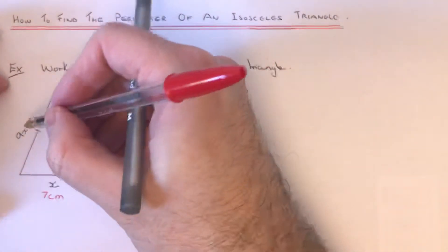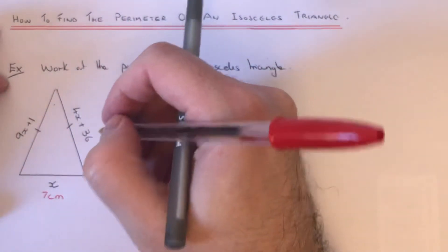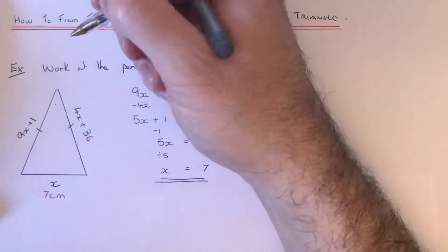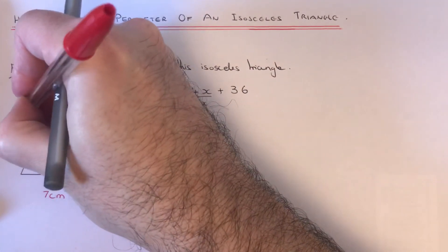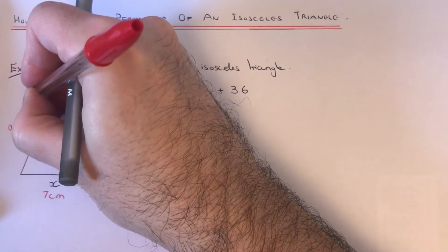Okay, and then this one here is 9x plus 1. So if we substitute x, so 9 times 7 plus 1, that will give us 64.